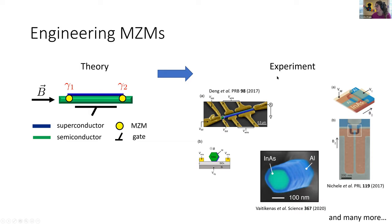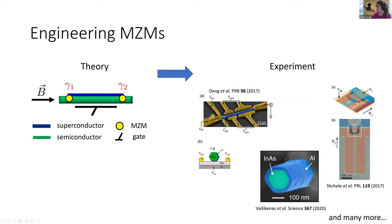All of this was theory — now we want to go from theory to experiment. Can we realize Majorana zero modes and build this topological superconductor? There have been many experiments combining these ingredients that have seen some evidence of Majorana zero modes. For instance, using an indium arsenide nanowire (shown in green) with a superconductor deposited on it, metallic gates to tune the system into the topological phase, and performing local transport experiments that see a zero-energy state appearing at the end of the wire — consistent with a Majorana zero mode, though other explanations are also possible.